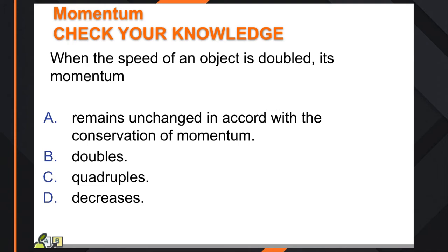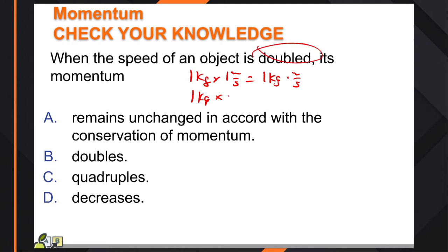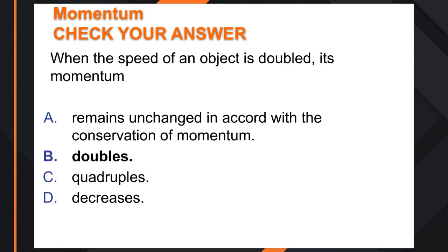When the speed of an object is doubled, what does its momentum do? If you can't remember, throw in some easy numbers: 1 kilogram times 1 meter per second equals 1. If your object doubles in speed, put in 2 — you get 2 kilogram-meters per second. So the momentum doubles when the velocity doubles.